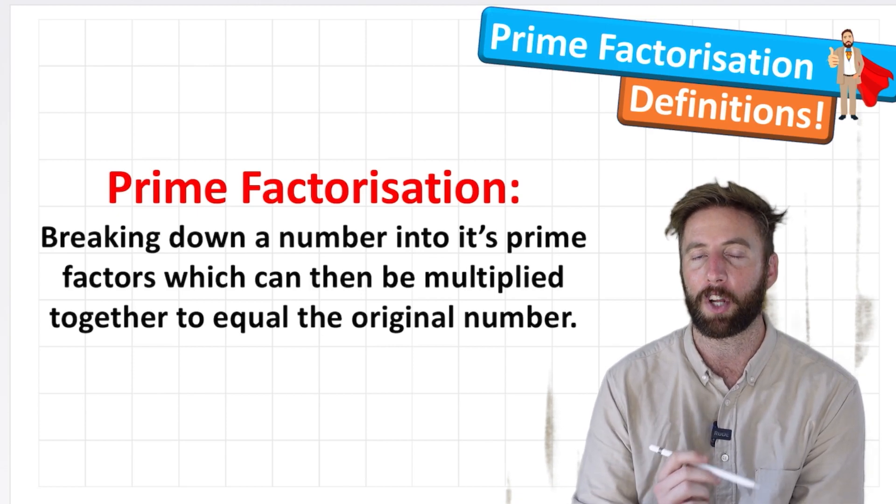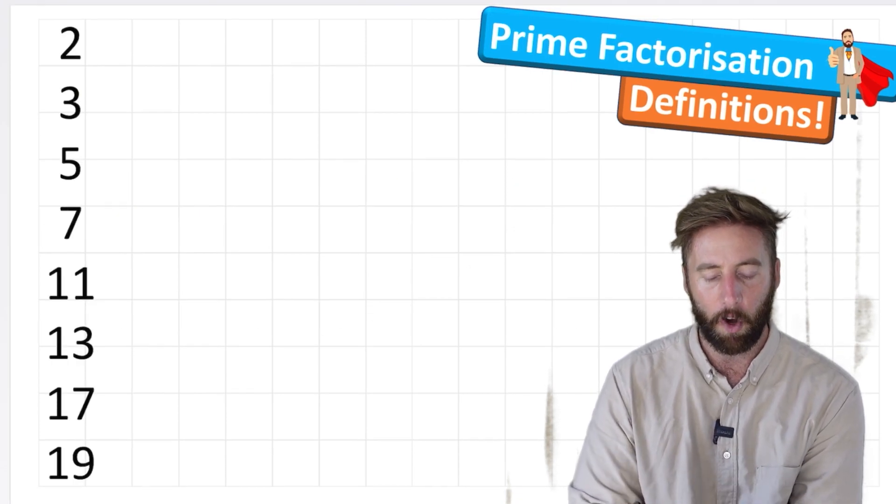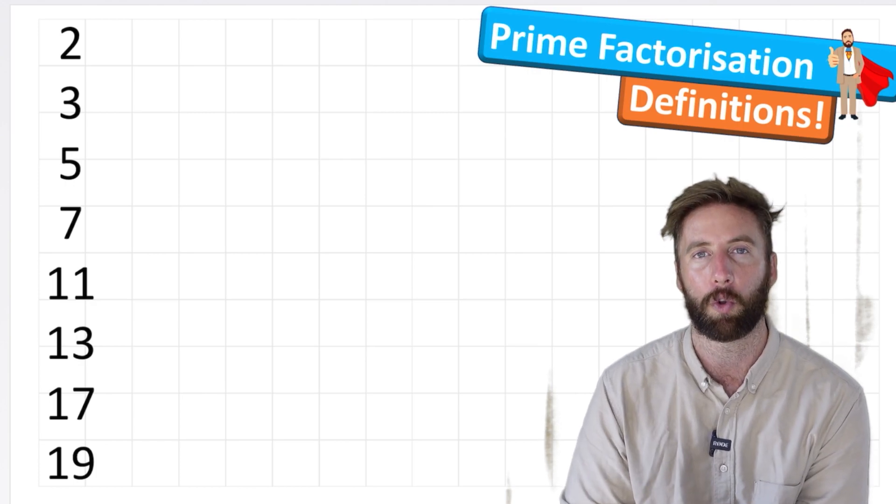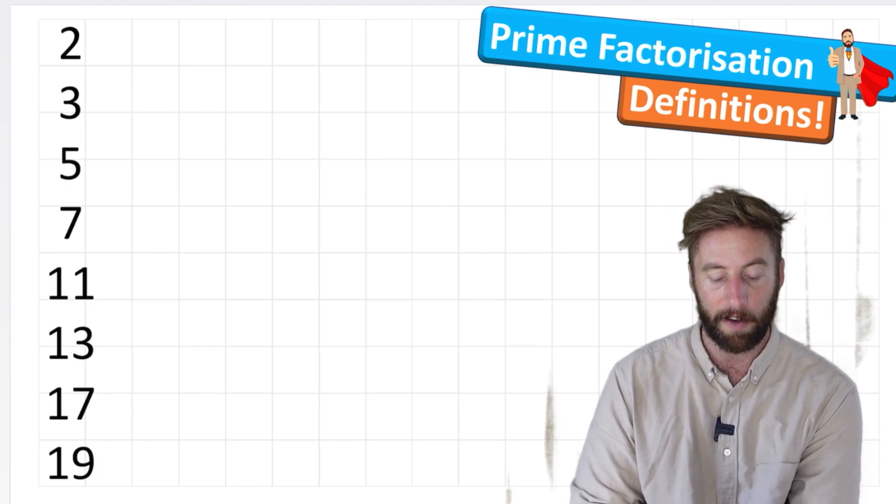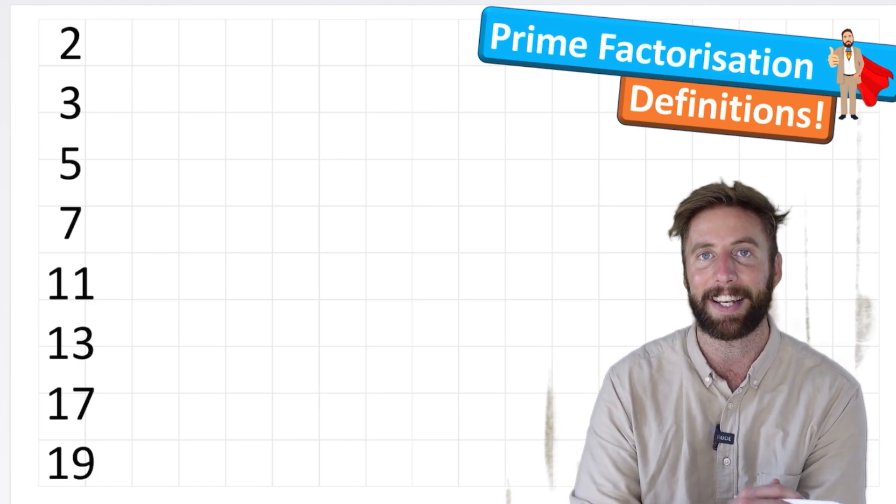Well, let's start by getting some prime numbers on our screen to help us. So we've got these prime numbers here. These are the prime numbers all the way up to 20: 2, 3, 5, 7, 11, 13, 17, and 19.